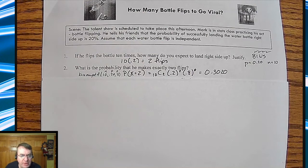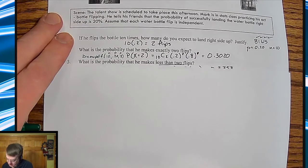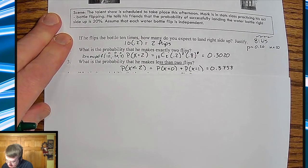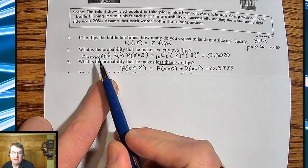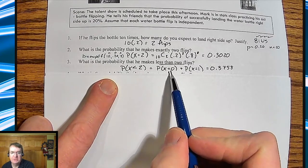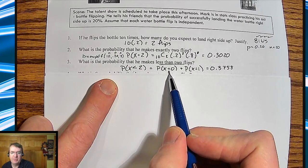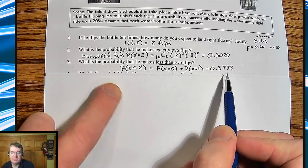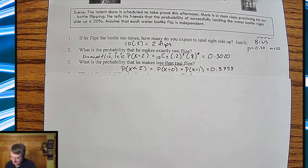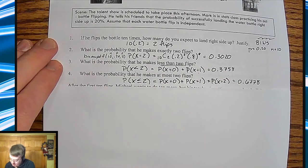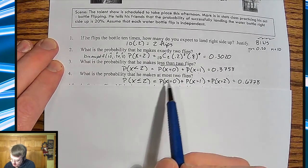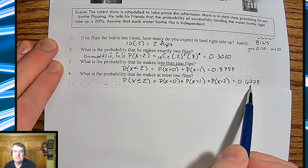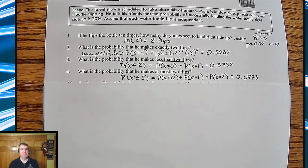So anyway, what's the probability that he makes it less than two flips? So we only go less than two flips. And again, you can use binomial CDF here. So probability of zero times the probability of one is going to equal about 37%. And then the probability of getting at most two flips, we would add up both of those and we get about 67% chance.